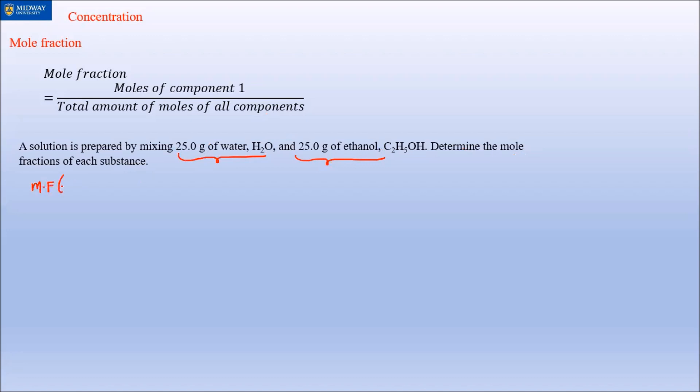What should we do first? We have to calculate the moles of water and moles of ethanol. Then we can add them up for the denominator and calculate separately for the water and ethanol component.